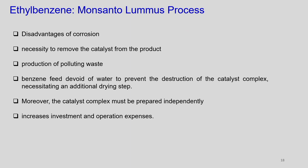Key points of the Monsanto-Loomis process: there is corrosion because the catalyst is in liquid phase, necessitating removal of catalyst from product — it is a polluting waste. The benzene feed must be devoid of any water to prevent destruction of the catalyst complex, requiring an additional drying step which increases cost. The catalyst complex must also be prepared independently, adding to cost. All this increases investment and operating expenses.